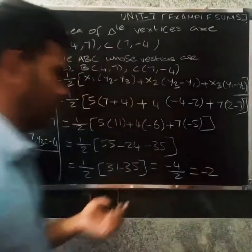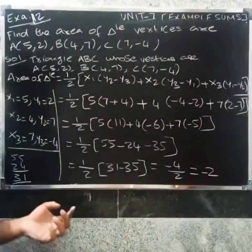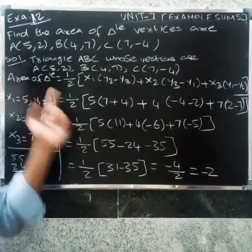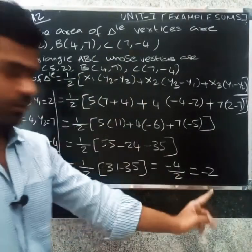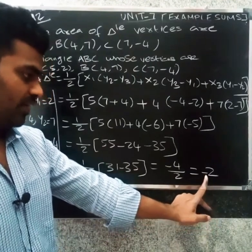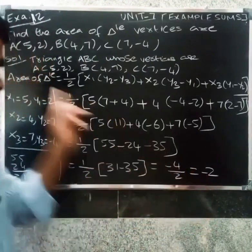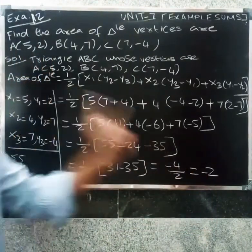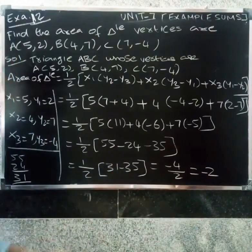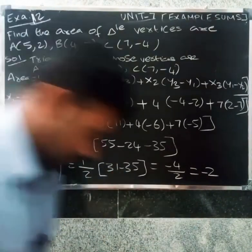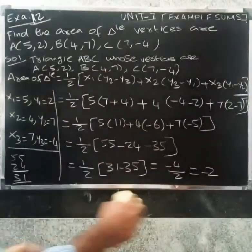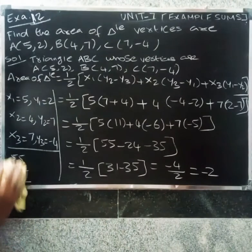So 1 by 2 into 55 minus 24 minus 35. That gives 1 by 2 into 55 minus 24 equals 31, then 31 minus 35 equals -4, divided by 2 equals -2. Area of triangle cannot be negative, so area of triangle equals 2 square units.